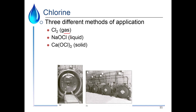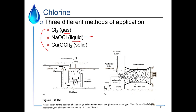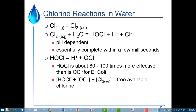We can apply disinfectants in three different ways: gases, liquids, and solids. For chlorine specifically: chlorine gas is the gaseous form, sodium hypochlorite is the liquid form — essentially bleach — and calcium hypochlorite is the solid, similar to pool tablets. Here are some old pictures of gaseous chlorine tanks, and we can see the chlorine mixers for applying these to the water itself.